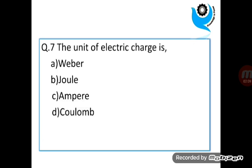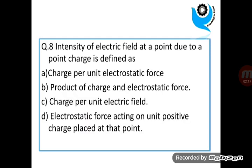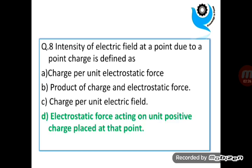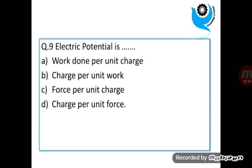Question 7. The unit of electric charge is. Answer is Coulomb. Question 8. Intensity of electric field at a point due to a point charge is defined as. Answer is D. Question 9. Electric potential is. Answer is A.